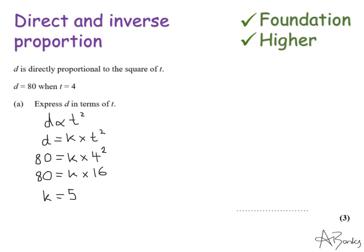I can now improve on this formula that I had here because I now know k is 5. So my formula is d equals 5, and I can write 5 times t squared, or I can just write 5t squared. So that's my answer. That's my formula connecting d and t together. So d equals 5t squared.